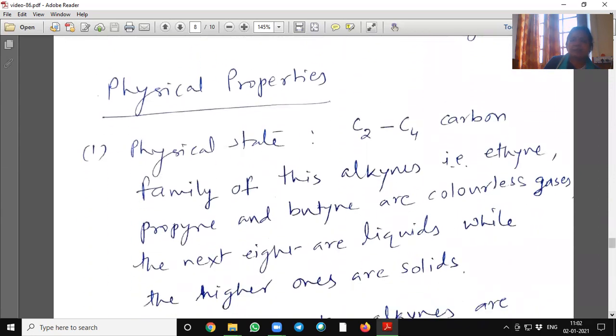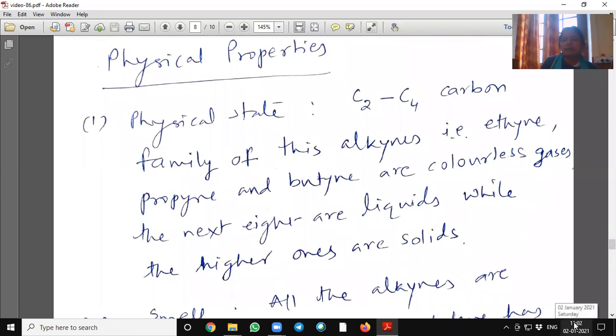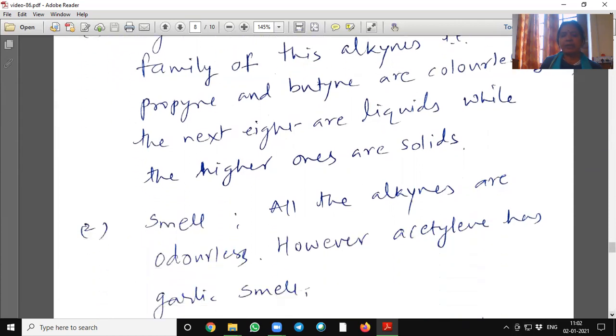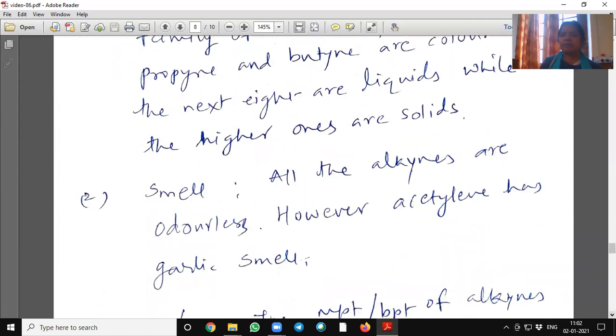Physical properties. First to third member means C2 to C4 carbon family of this alkyne that is ethyne, propyne and butyne are colorless gases. The next eight are liquids while higher ones are solid. Smell, all the alkynes are odorless, however acetylene has garlic smell.